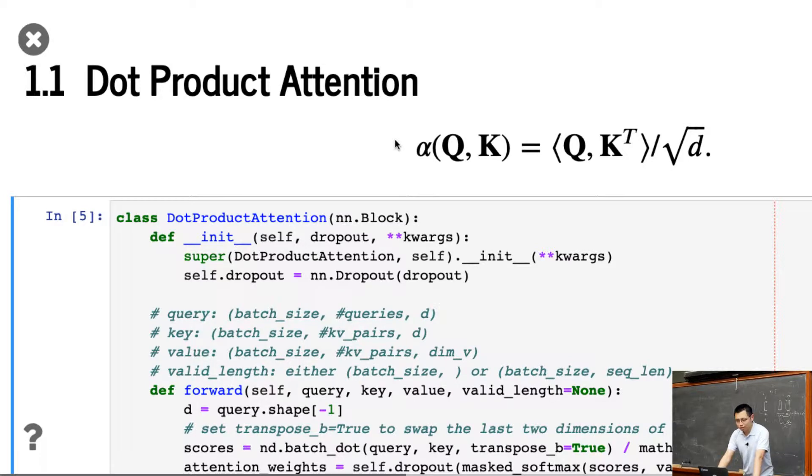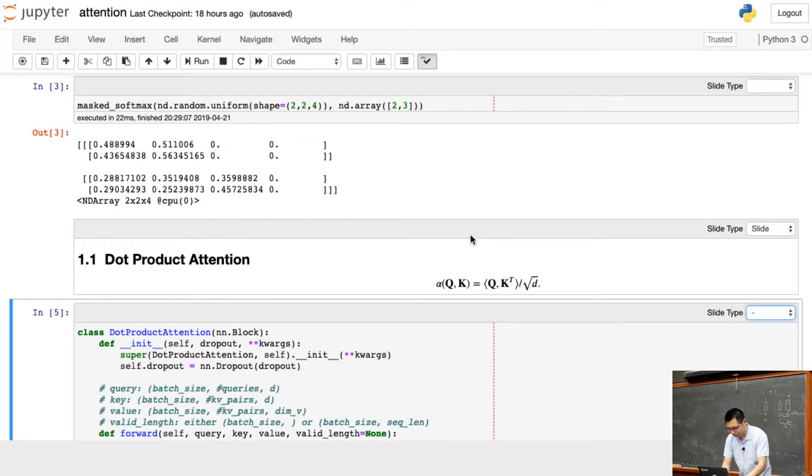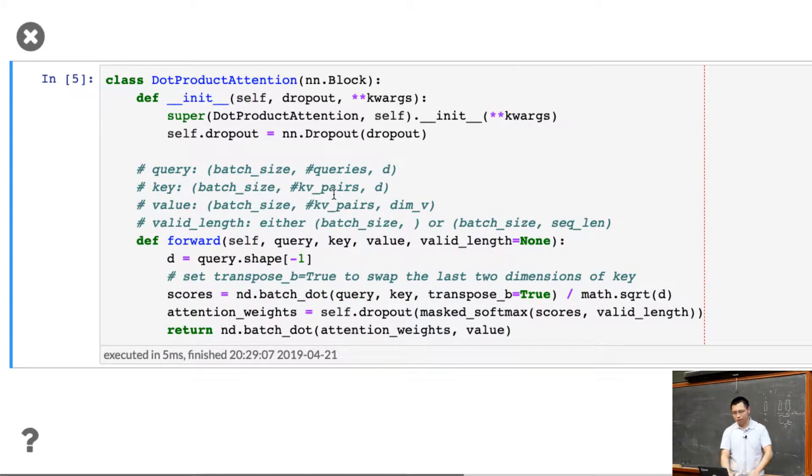So the first thing is called dot product attention. The forward function, the query will be the batch size and the number of queries you have and the dimension of the query, which is D. Because it's dot product, you need to guarantee the queries and the keys have the same dimension. The keys also similarly batch size, the number of key value pairs, and dimension D. The values will be batch size, the number of key value pairs, and the value can be another dimension. The value length, we don't need to consider right now. We need that for the transformer, but we don't need it right now.